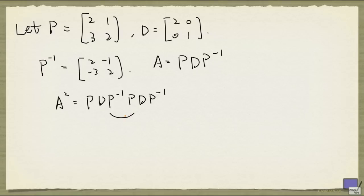P inverse times P, that's the identity. So this, after you simplify, will be P D squared. Because this has become the identity. So I have D times I times D. That gives me D squared times P inverse.